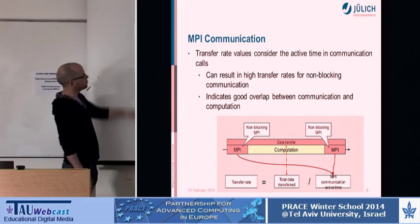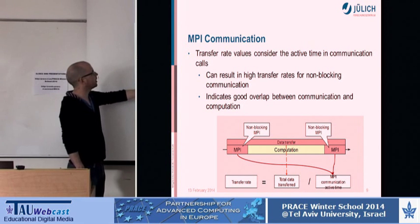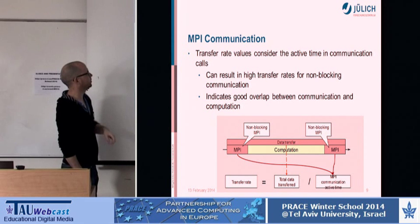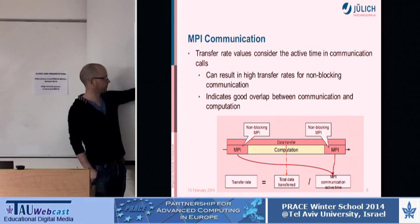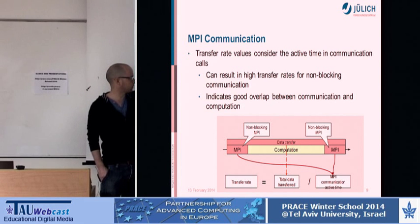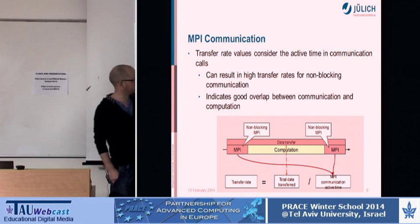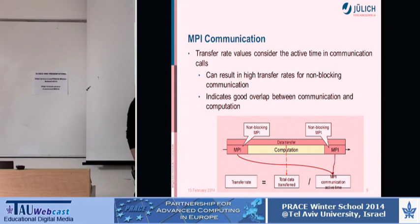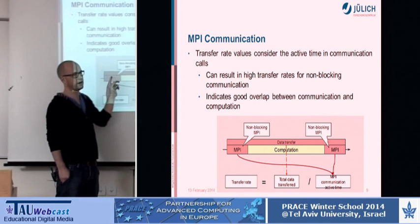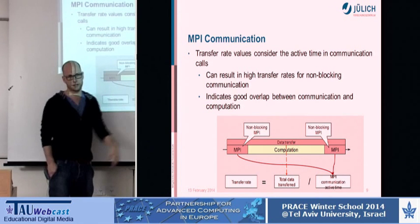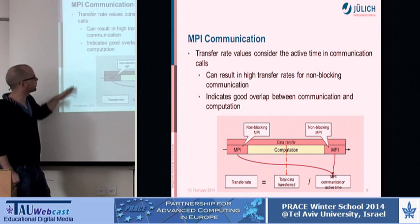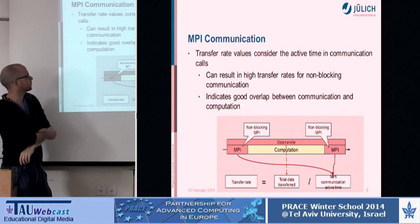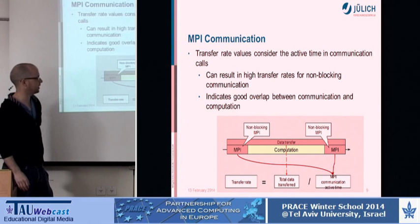For MPI communication, the transfer rate values can be very high because of non-blocking communication. With a non-blocking MPI call, the data transfer starts but you go back to your code to do some computation, then a wait call marks the end of the non-blocking operation. It only counts the time you were actually in the MPI calls, so the data transfer rate appears very high. This can give you a good indication of how well your communication and computation overlap.